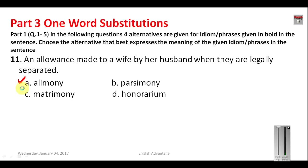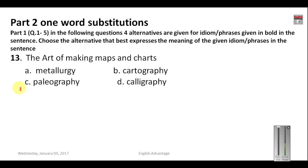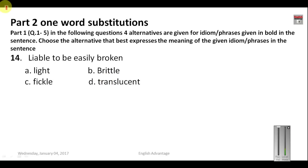Question 12: 'A wild and noisy disorder' — the one-word substitution is 'pandemonium.' Other words like revolution and agitation are similar but not the same. Question 13: 'The art of making maps and charts' — the answer is 'cartography.' Calligraphy is the art of good handwriting, and paleography relates to ancient writing. Question 14: 'Liable to be easily broken' — the answer is 'brittle,' also known as fragile. 'Light' means not heavy, 'fickle' means unstable, and 'translucent' means not opaque. Your answer is B — brittle.